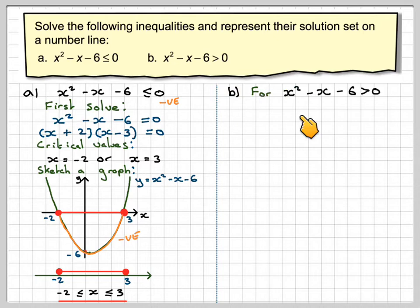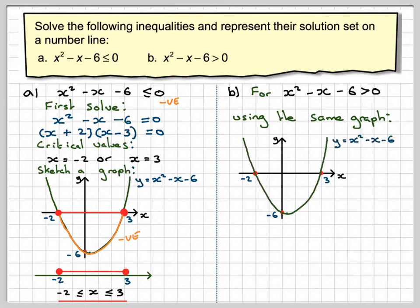Now for b, we're doing x squared minus x minus 6 is greater than 0. So using the same graph, just use exactly the same graph, and you'd have to do this bit first if you hadn't done it already.